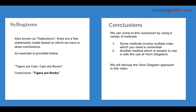Syllogisms are also called deductions. Basically you are provided with a set of statements and you need to draw conclusions based on those statements. For example: tigers are cats, cats are rocks — the conclusion is tigers are rocks. One thing to remember is you should not apply real-world understanding. Cats being rocks doesn't make sense, but you just need to focus on what the conclusions are.